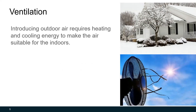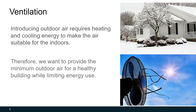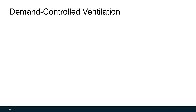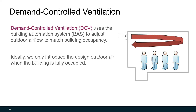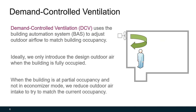However, whenever we bring in outdoor air, we need to either heat the cold air or cool and dehumidify it to make it suitable for the building. Because of that, we don't really want to bring in any more outdoor air during extreme conditions than we need to. So the idea is we want to provide the least amount of outdoor air to save energy, but enough to keep our occupants healthy. Demand-Controlled Ventilation uses the building automation system to adjust outdoor air flow rates automatically to match building occupancy. When the building is partially occupied, we can reduce that airflow and match the number of occupants we have, and therefore save energy.